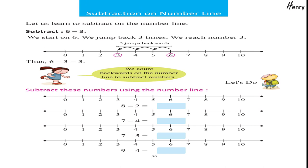Subtraction on number line: let us learn to subtract on the number line. Subtract six minus three. We start on six; we jump back three times; we reach number three. Thus, six minus three equals three. We count backwards on the number line to subtract numbers. Let's do: subtract these numbers using the number line.